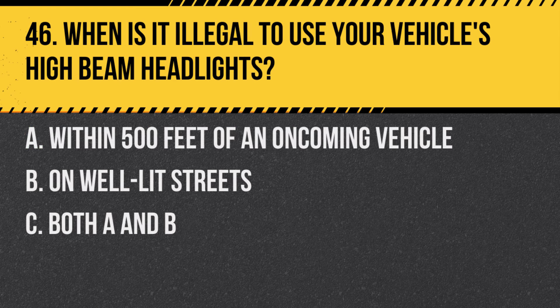Question 46: When is it illegal to use your vehicle's high beam headlights? A. Within 500 feet of an oncoming vehicle. B. On well-lit streets. C. Both A and B. Answer: C. Both A and B. It's illegal to use high beam headlights within 500 feet of an oncoming vehicle and on well-lit streets.